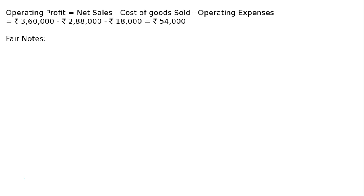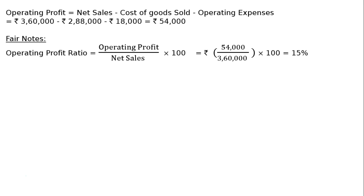Rs. 54,000 is the operating profit. Operating profit ratio is equal to operating profit upon net sales into 100, that is Rs. 54,000 upon Rs. 3,60,000 into 100, equal to 15%.